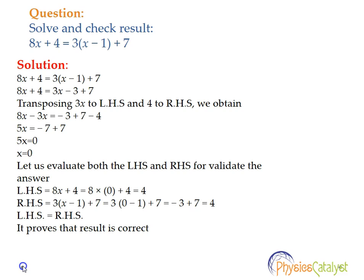Now let's look at another, more complex problem. The linear equation is 8x + 4 = 3(x − 1) + 7. Again, let's bring the variable terms to one side and constant terms to the other. We can write this as 8x + 4 = 3x − 3 + 7.